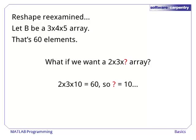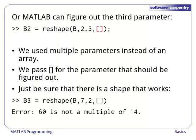If b is a 3 by 4 by 5 array, then it has 60 elements. We want to transform it to a 2 by 3 by something array, and it isn't too hard to see that the third dimension must be of size 10. What if we don't want to compute the extra dimension every time? It turns out MATLAB can compute a single missing dimension in reshape. In this case, we pass each dimension size as a separate parameter. This is fine for reshape. For the last size, we put in a pair of empty brackets, which is a signal to MATLAB to figure out what that dimension is for us.